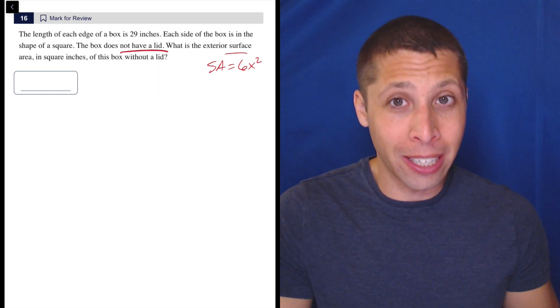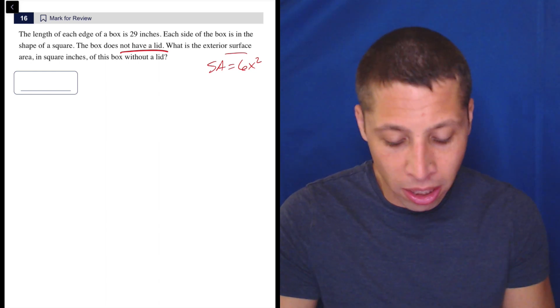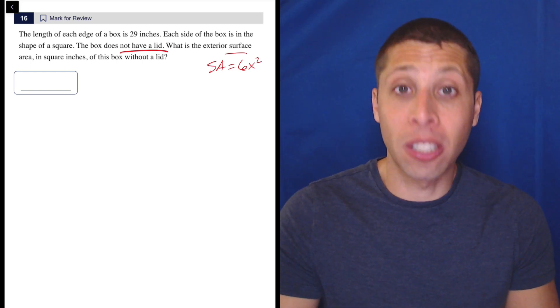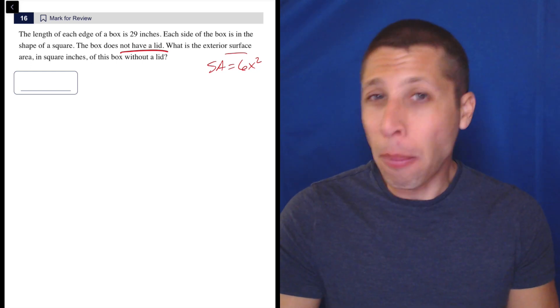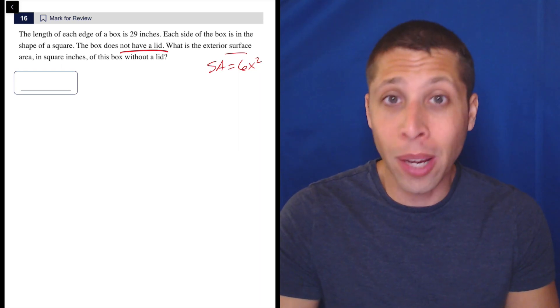So you could amend the formula to remove the lid, but more importantly, just think about surface area as a concept. To me, surface area and perimeter are very similar. We don't want to memorize a bunch of formulas. We want to think about what the concept means and adapt it to the situation.